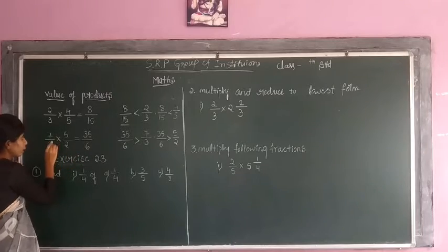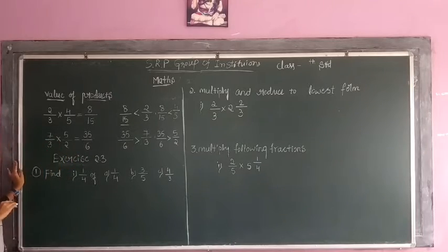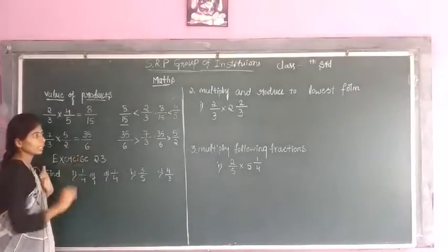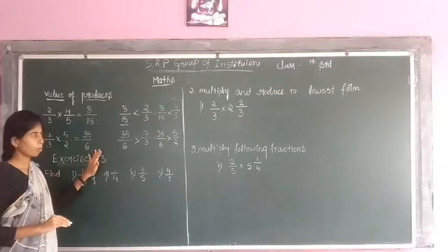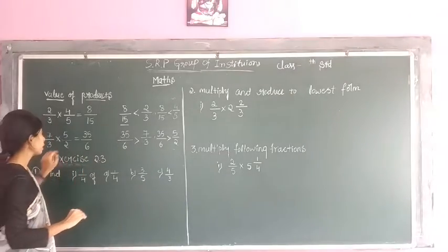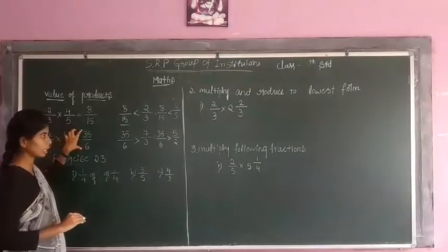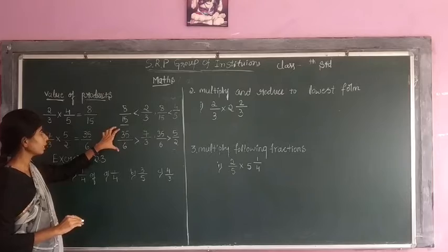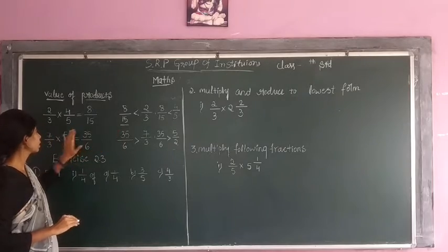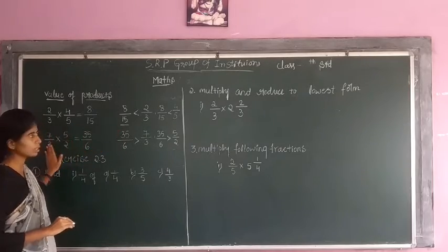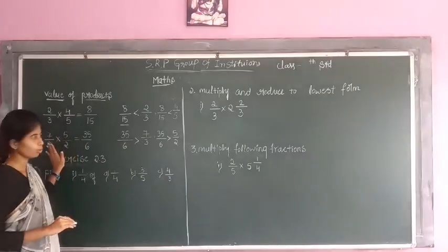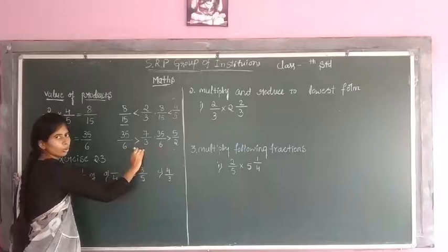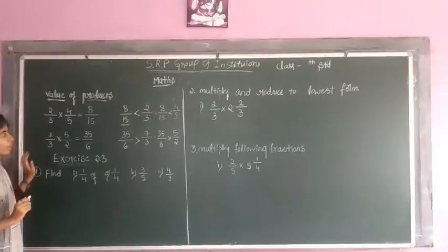If we are multiplying a fraction by a fraction and we are getting an improper fraction, then this product is an improper fraction and it is greater than these two fractions. Understood?